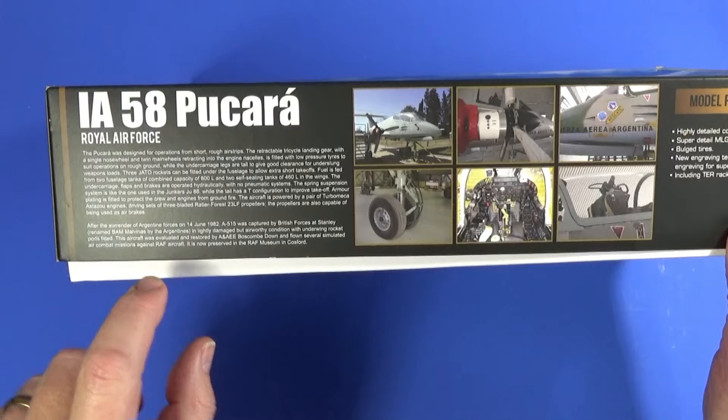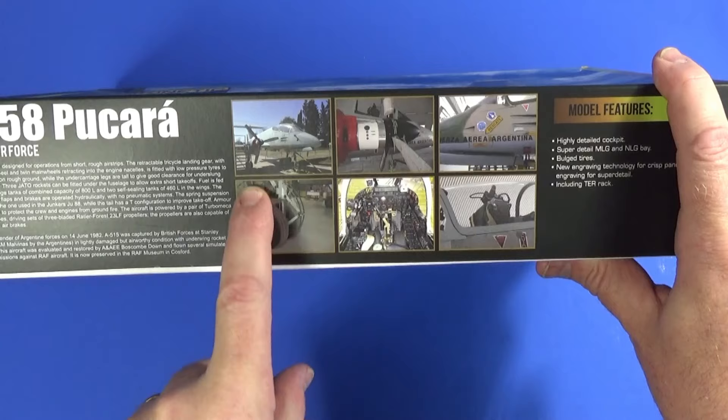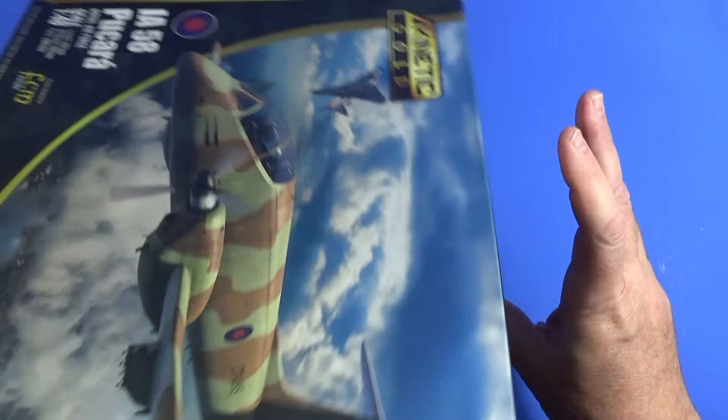Very nice. On this long side here, there's some information about the Pucara and what happened to this particular aircraft, A515, as it was when it was in Argentine service. Here there's, kind of interesting, there's some little reference photos, which could be quite handy if you're going to do a little bit of extra detailing, especially in the cockpit area, that could be quite useful, and some features of the aircraft here.